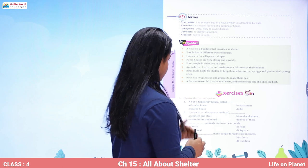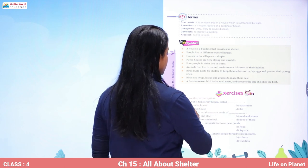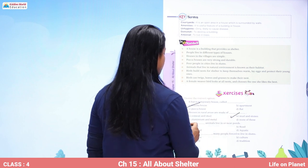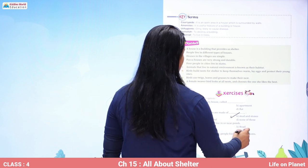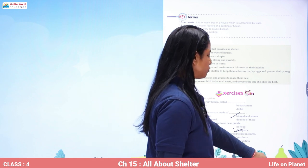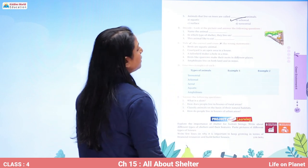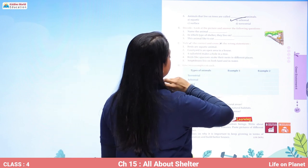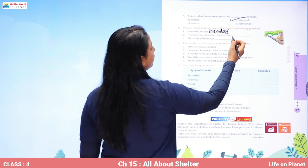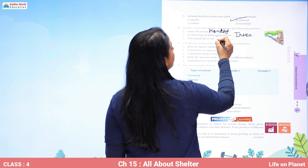Let's complete the exercise to see what we have learned. A hut is a temporary house called a kaccha house. Houses in rural areas are made of mud and stones. Aquatic animals live in or near ponds. Due to poverty, many people are forced to live in slums. Animals that live on trees are called arboreal animals. Now let's decode the picture — the animal shown is a monkey. Monkeys live on trees, making them arboreal animals, and they like to eat bananas.